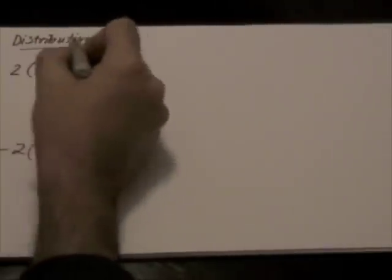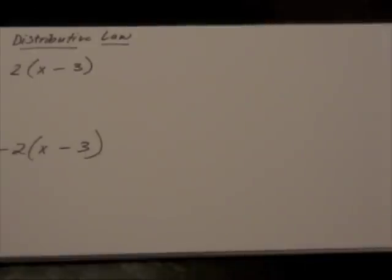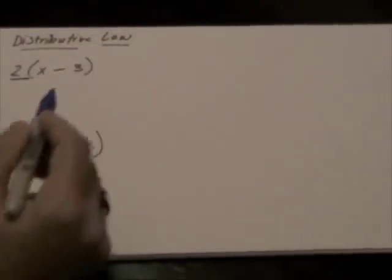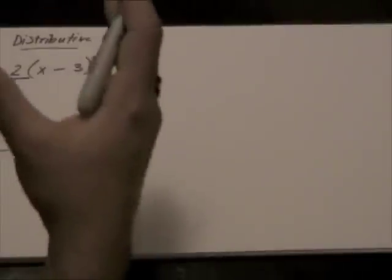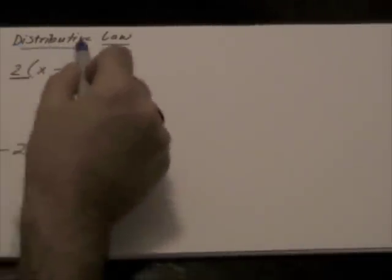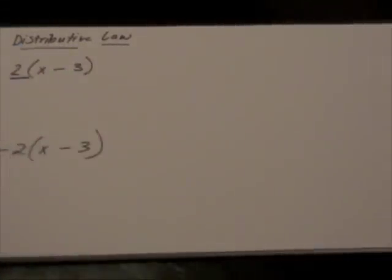The Distributive Law. The Distributive Law states whenever we have a term that is outside of the brackets, it means that that value is being multiplied or distributed throughout the entire brackets.